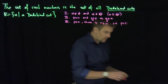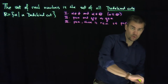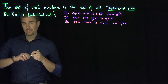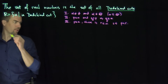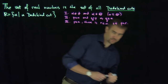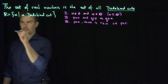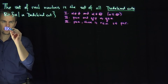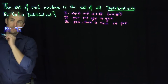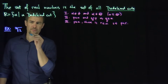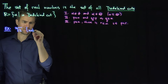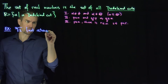We can construct any real number in the form of a cut. For example, if we wanted to construct the real number — the third root of two — we know the third root of two is not a rational number, so this is not rational, but it's certainly real.